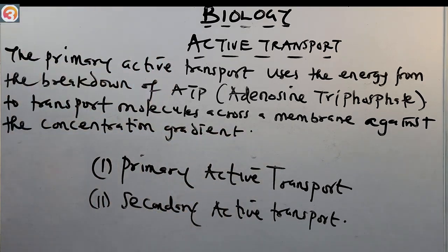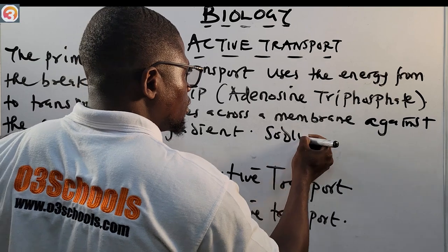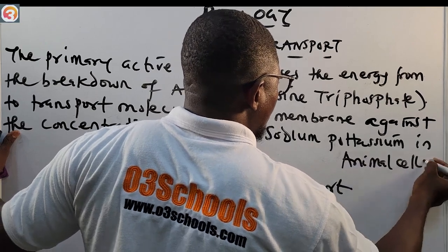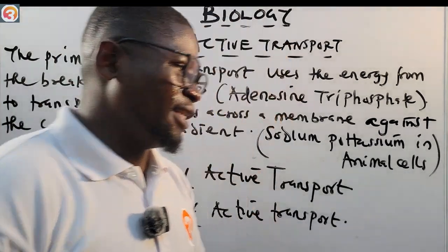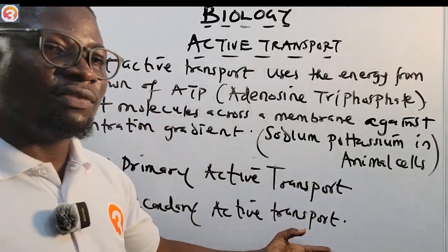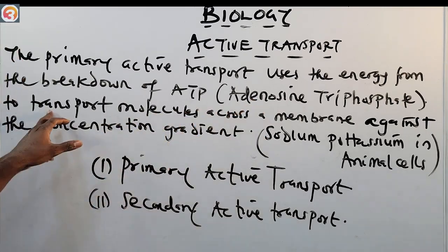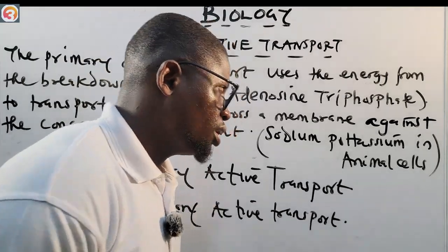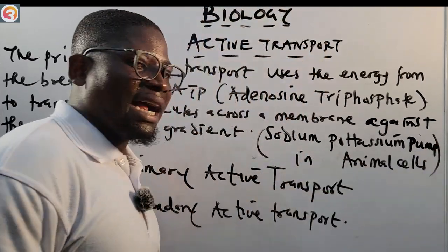An example of primary active transport is the sodium-potassium pump in animal cells. So to summarize: primary active transport uses the energy from the breakdown of adenosine triphosphate (ATP) to transport molecules across a membrane against the concentration gradient, and an example is the sodium-potassium pump in animal cells.